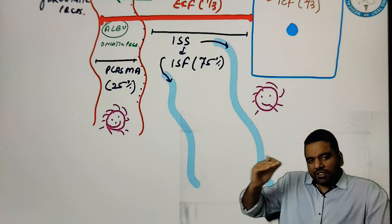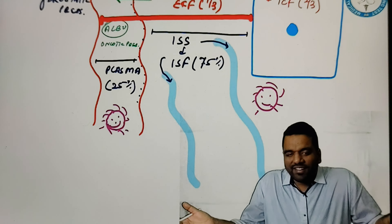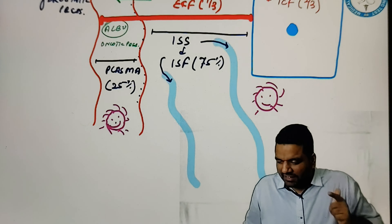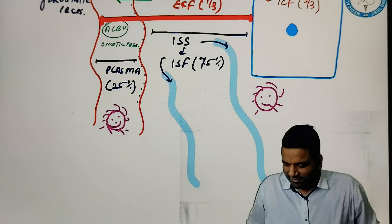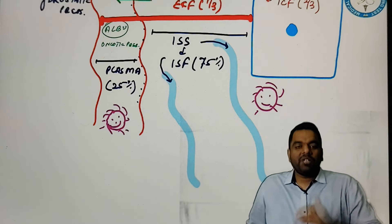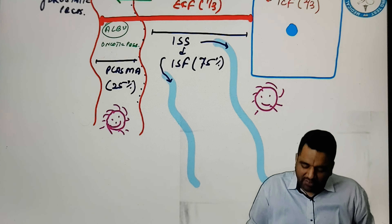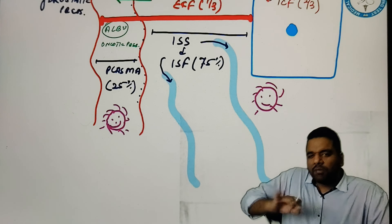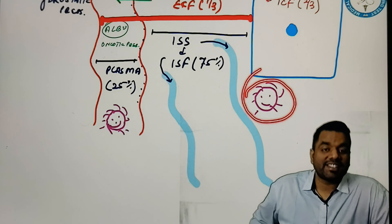But we know, is the lysosome present outside of the cell or inside of the cell? Inside the cell, because lysosome is a cell organelle, it should be present inside of the cell, not outside of the cell. So the lysosome is present inside of the cell, but bacteria is present outside of the cell.